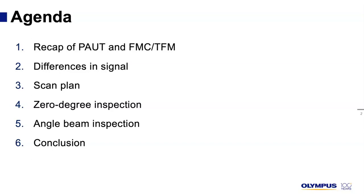We will then talk about signal characteristics — what are the differences between a Phased Array signal and a TFM signal? What advantages does TFM bring? What drawbacks as well? In terms of scan plan, what elements should we consider? Can we use any probe, any strategy, and the technology will just figure it out? Or is there more to it than just beautiful images? Then we will talk about zero degree inspection, angle beam inspection, how TFM compares to Phased Array. Finally, we'll wrap this session with a summary and a question period.